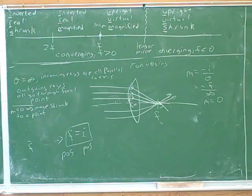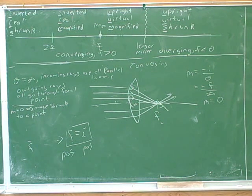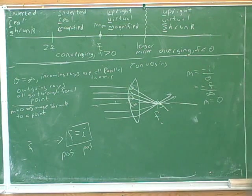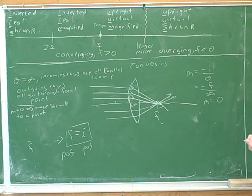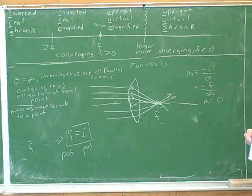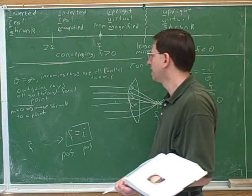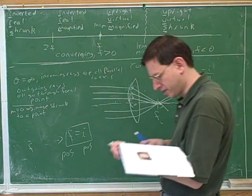The handout notes this as well. If you put the object at the focal point, the magnification would be infinite, and you can add that when it's at infinity the magnification is 0. All of this applies to both a converging lens and a converging mirror.